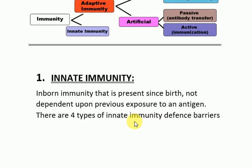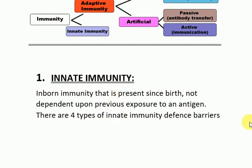Number one is innate immunity. It is the inborn immunity that is present since birth, not dependent upon previous exposure to an antigen. It doesn't need any exposure to an antigen to develop. There are four types of innate immunity defense barriers.